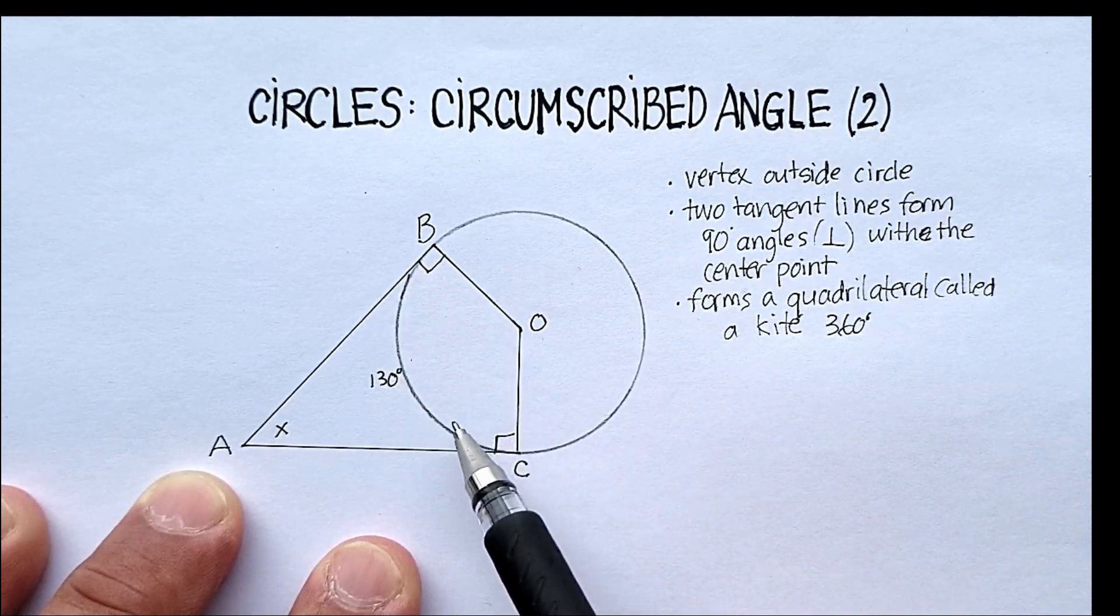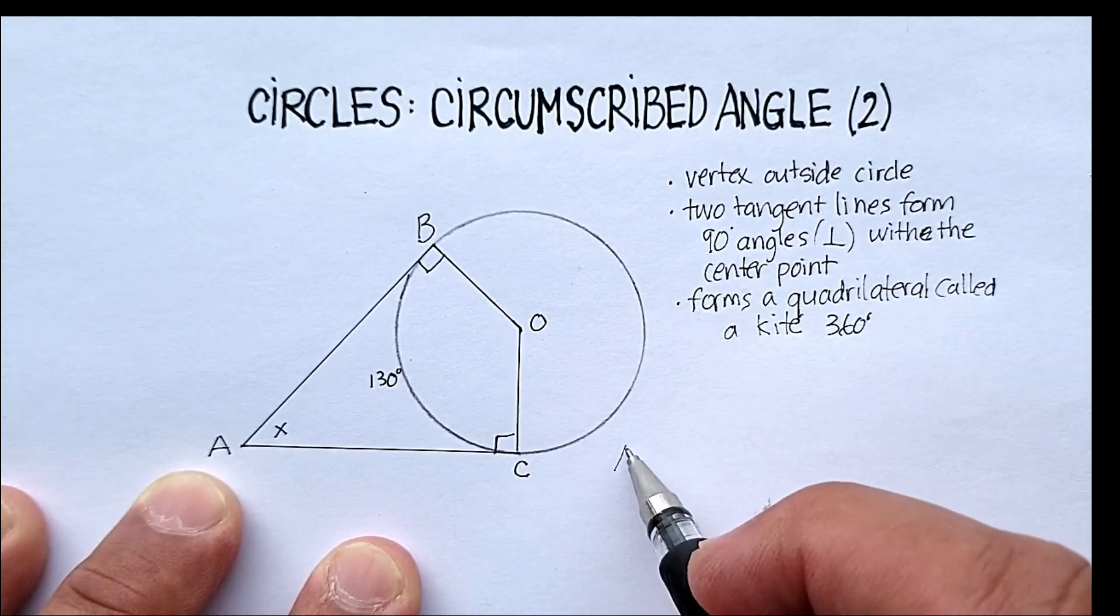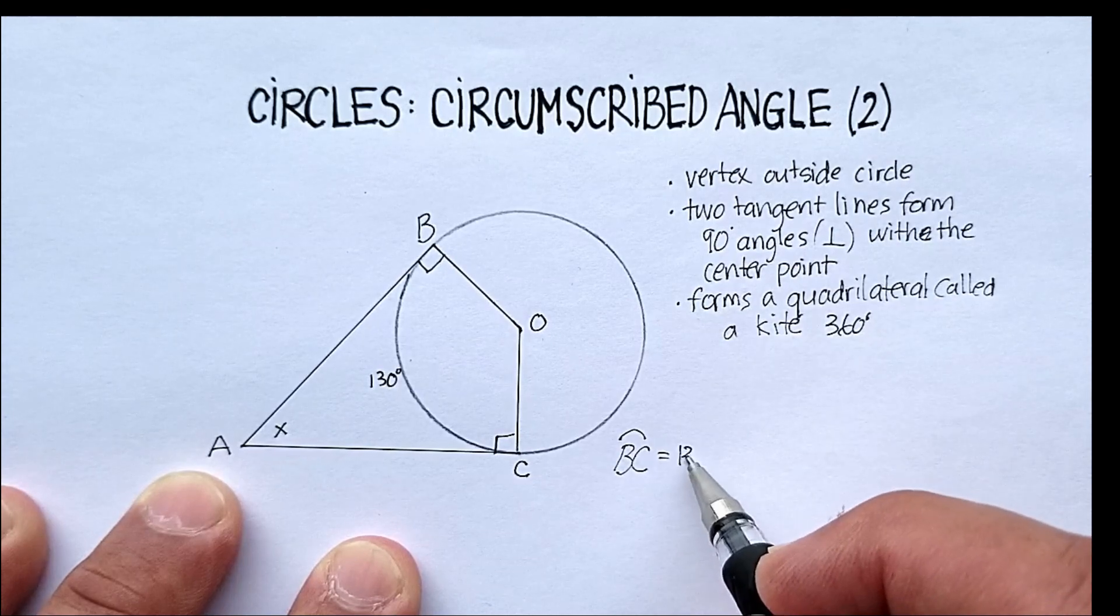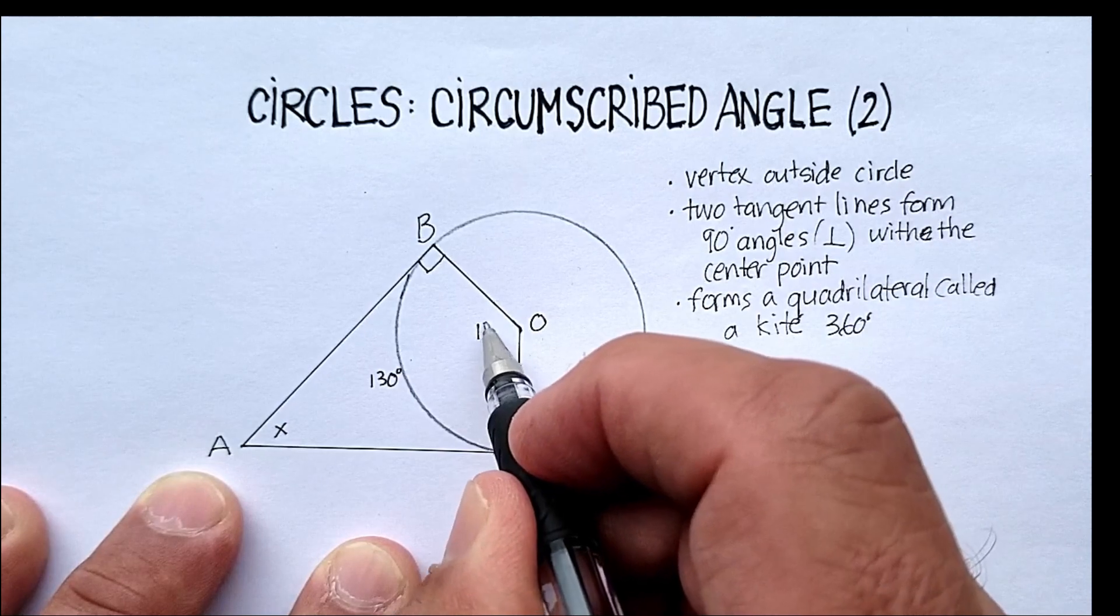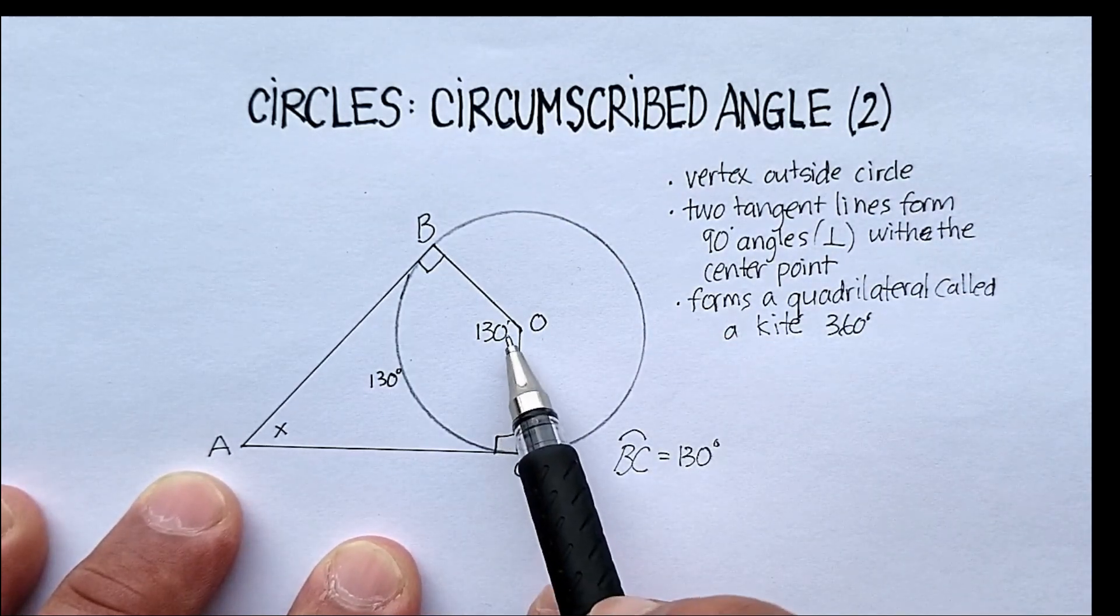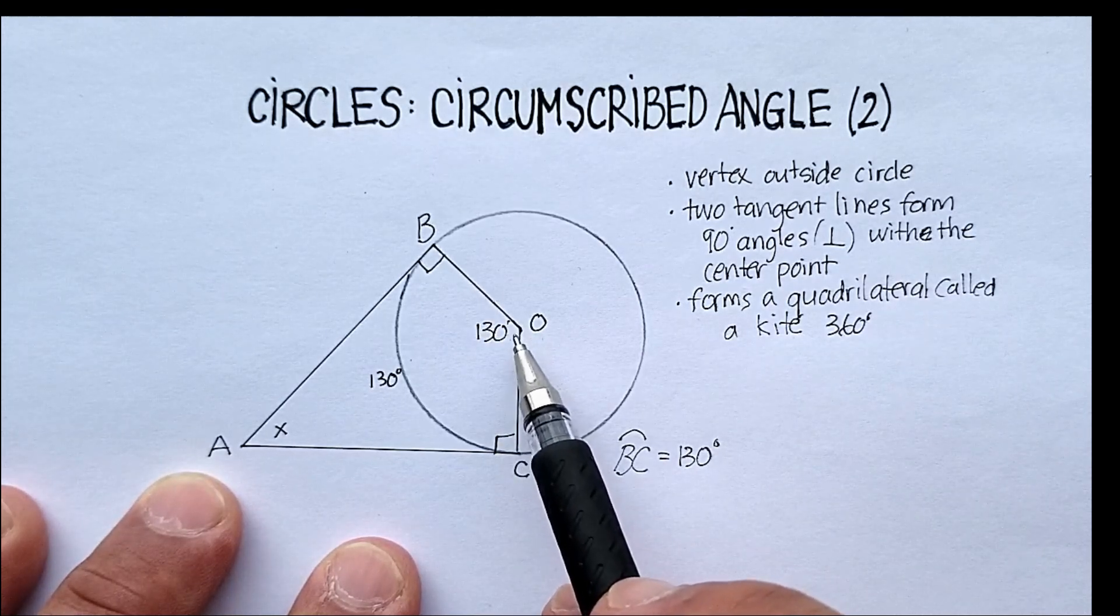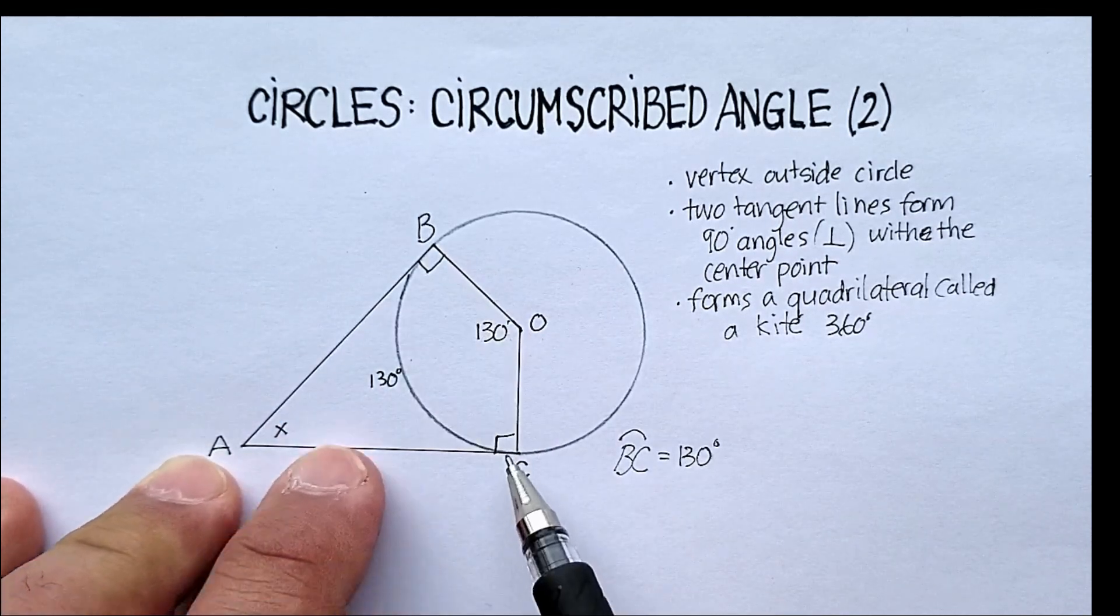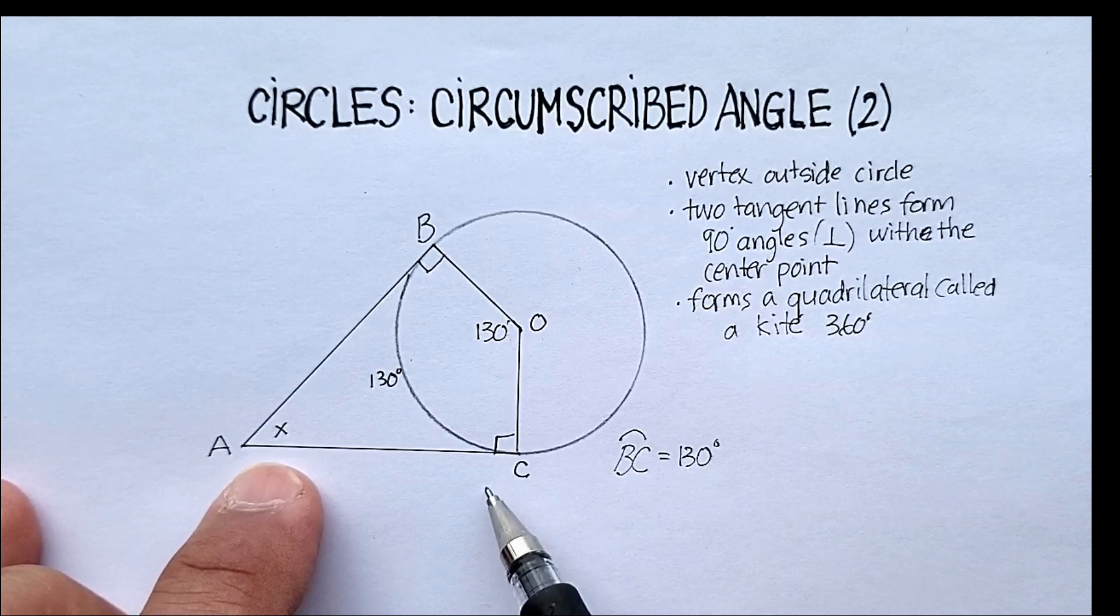In this particular case, I know that arc BC equals 130 degrees. Which means that my central angle is 130 degrees. Remember, central angle starts in the middle. The vertex starts in the middle of the circle. So I could just add up 90 plus 90 plus 130, and I could find my circumscribed angle.